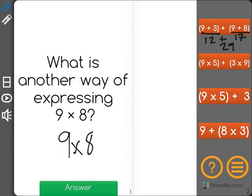We should remember that 9 times 8 will equal 72. The next one says 9 times 5, which is 45, plus 3 times 9, which is 27.